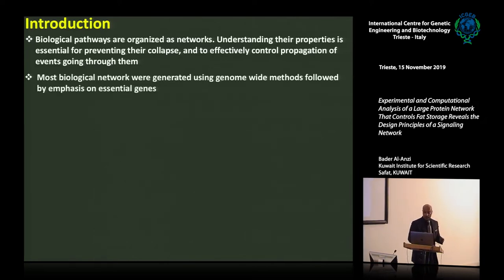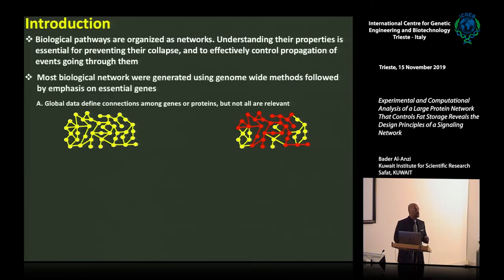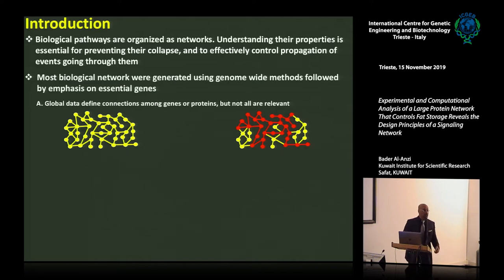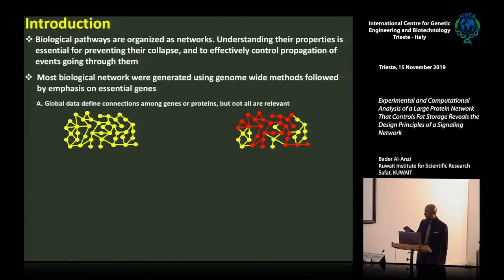The main problem with this approach is that when you use a global method for detecting protein-protein interactions, you will catch most interactions. But protein A will bind to protein B to regulate the cell cycle, while protein A will bind to protein C to regulate apoptosis. If you look at this global interaction, you have no way of knowing. The networks we need are ones where not only do A and B bind to one another, but they are involved in the same biological process.